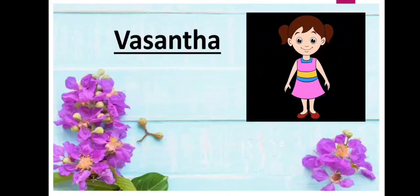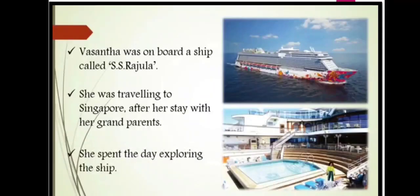Vasantha is the main character. Vasantha was on board a ship called SS Rajula. She was traveling to Singapore after her stay with her grandparents. She spent the day exploring the ship. 'Exploring' means traveling through in order to learn about something.